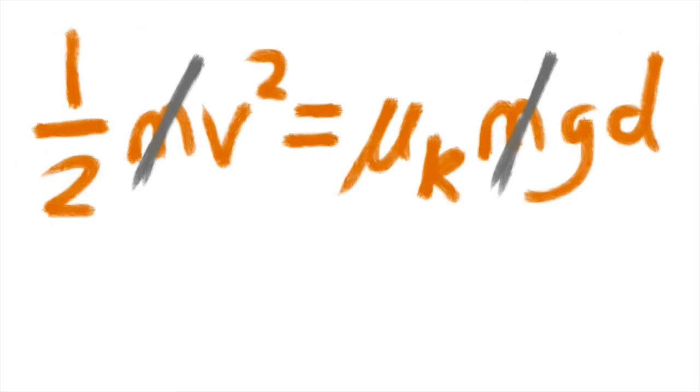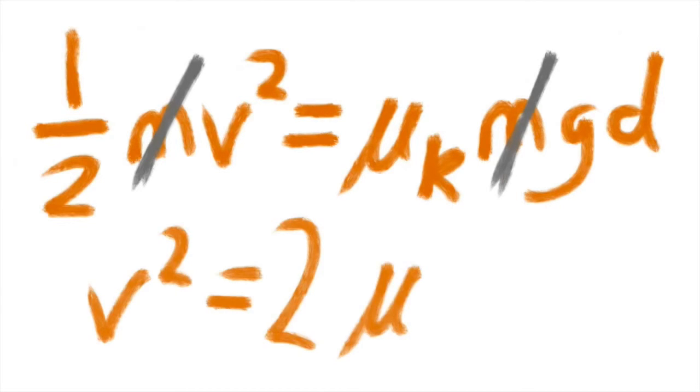We can multiply both sides by two to get that v squared, the velocity squared, is equal to two times mu sub k times g times d. That's g, the magnitude of gravity.